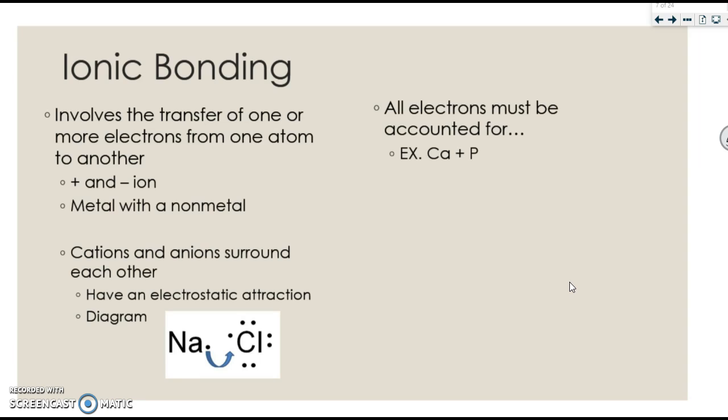And here the sodium is transferring its electron to chlorine. Sodium has one valence electron that it would like to get rid of so that it has a full outer shell. Chlorine has 7, so it needs one more to obtain that full valence shell. In the end, all electrons always have to be accounted for.